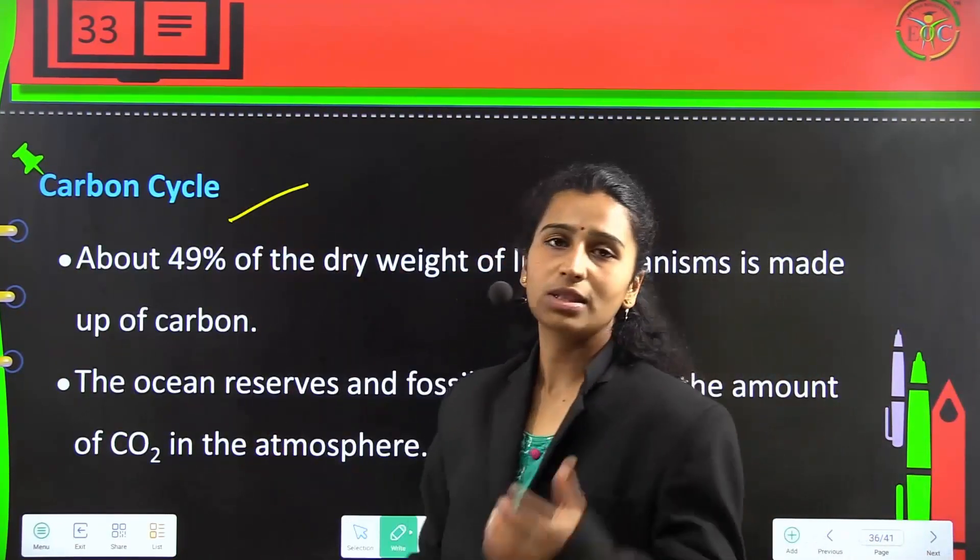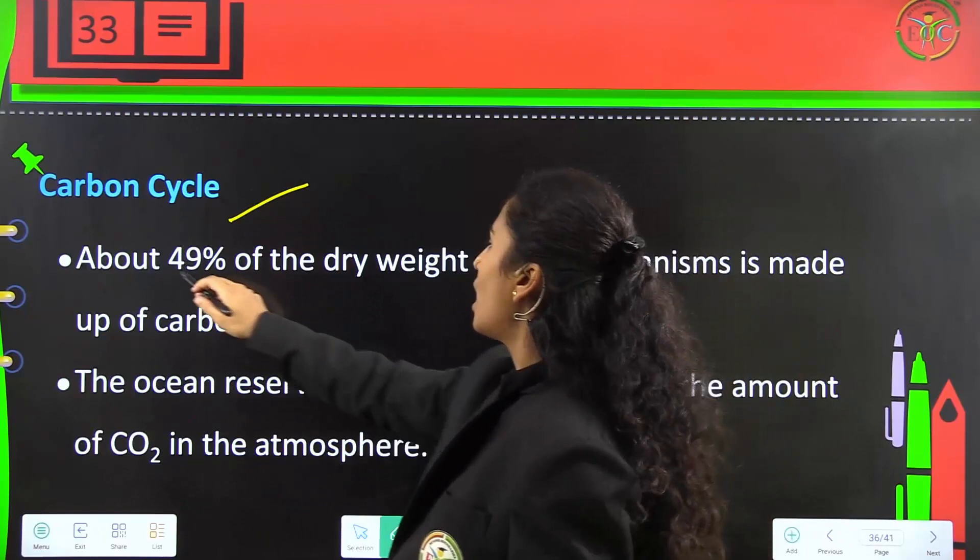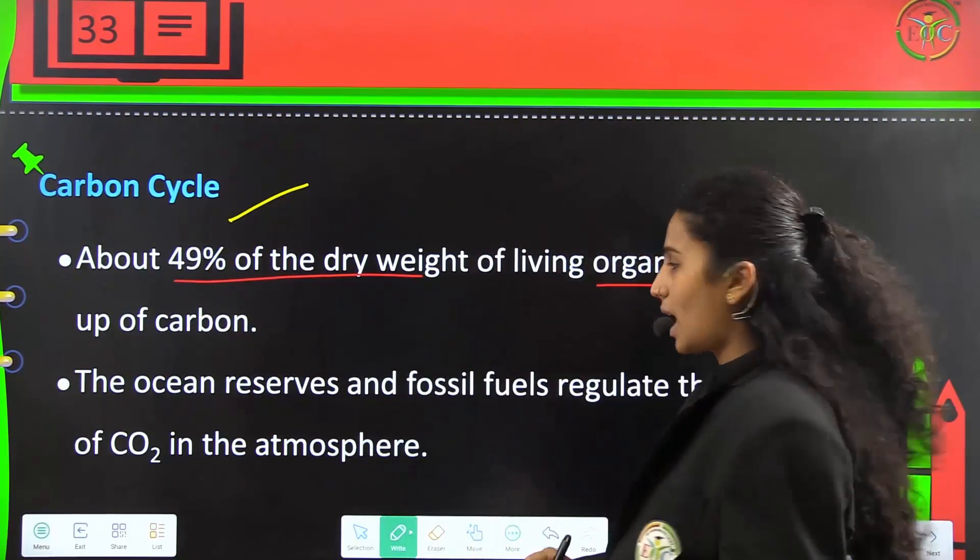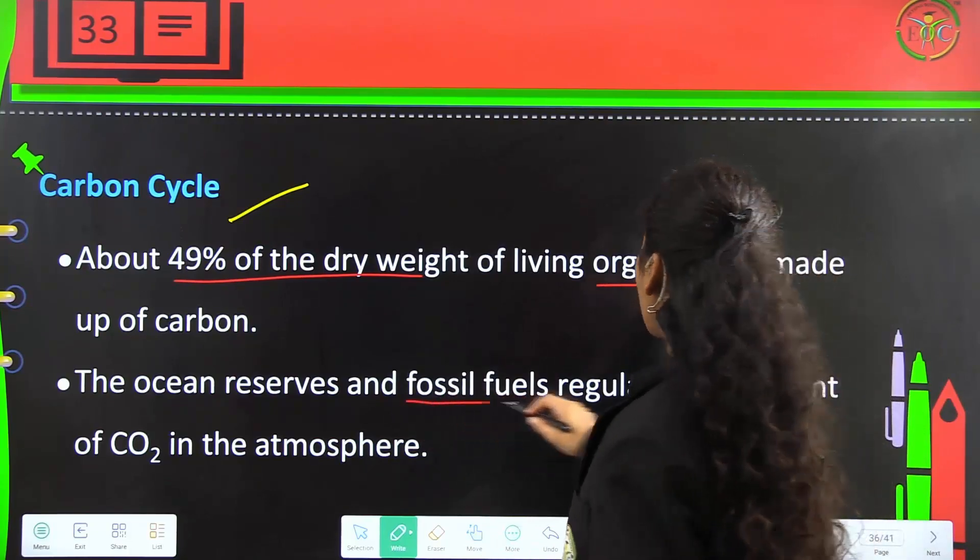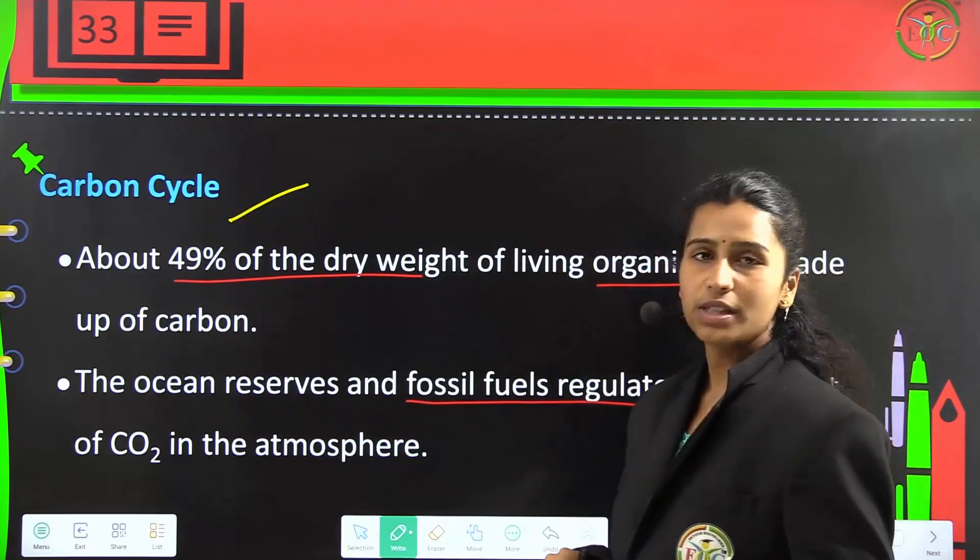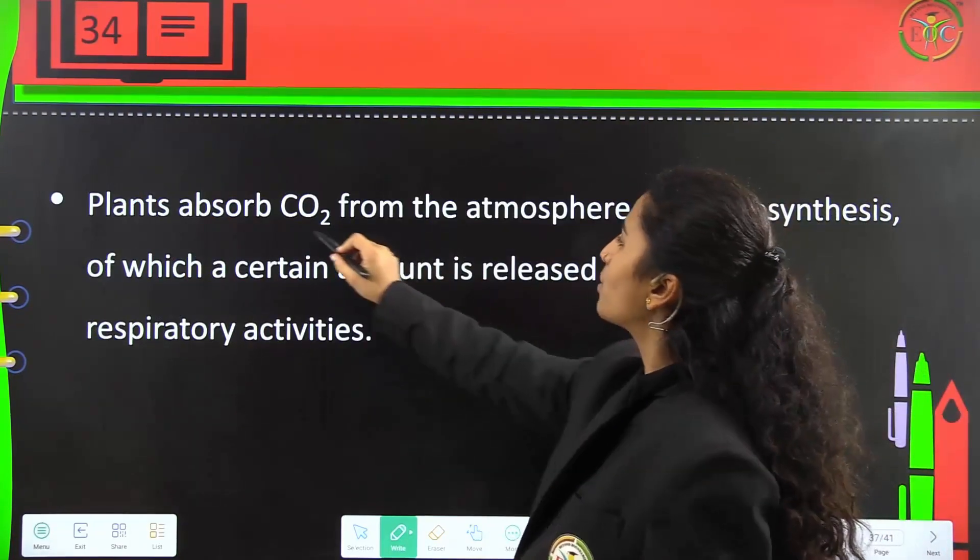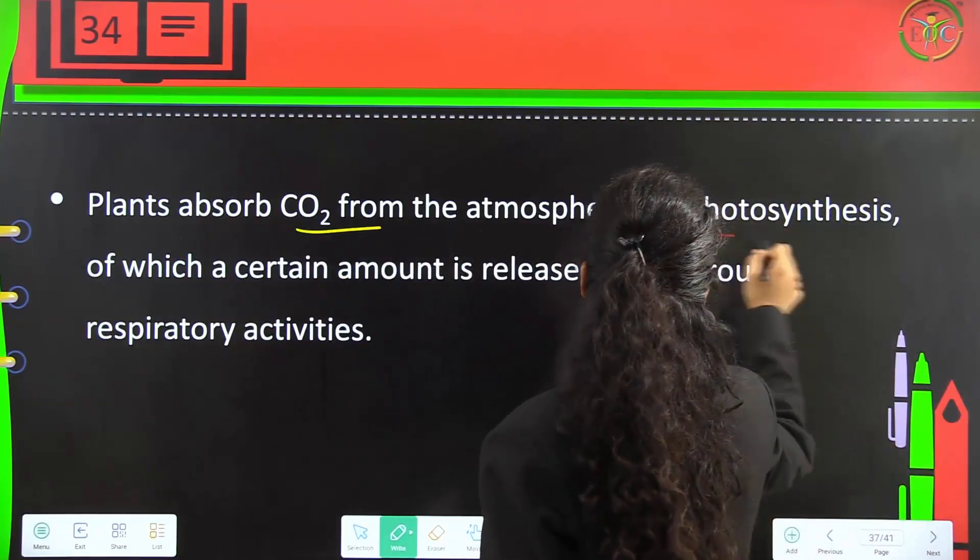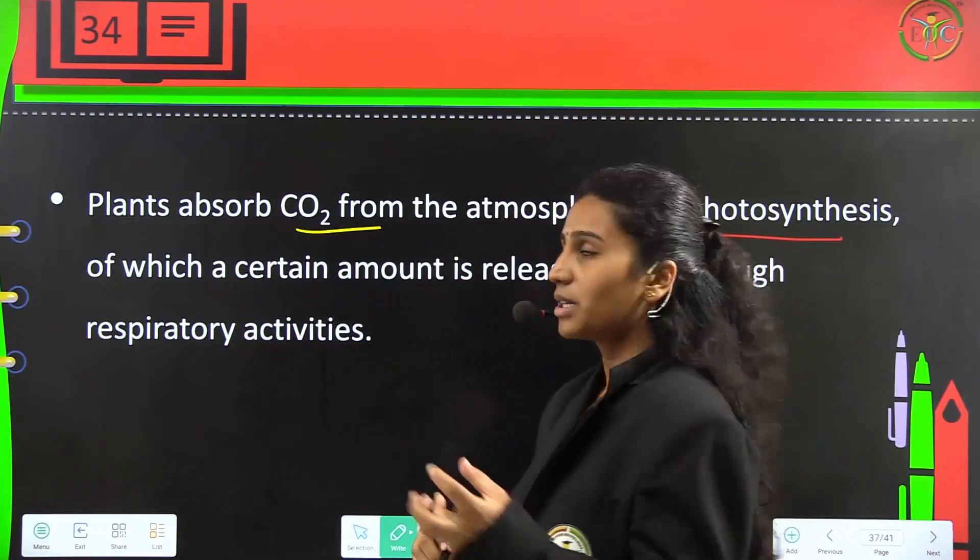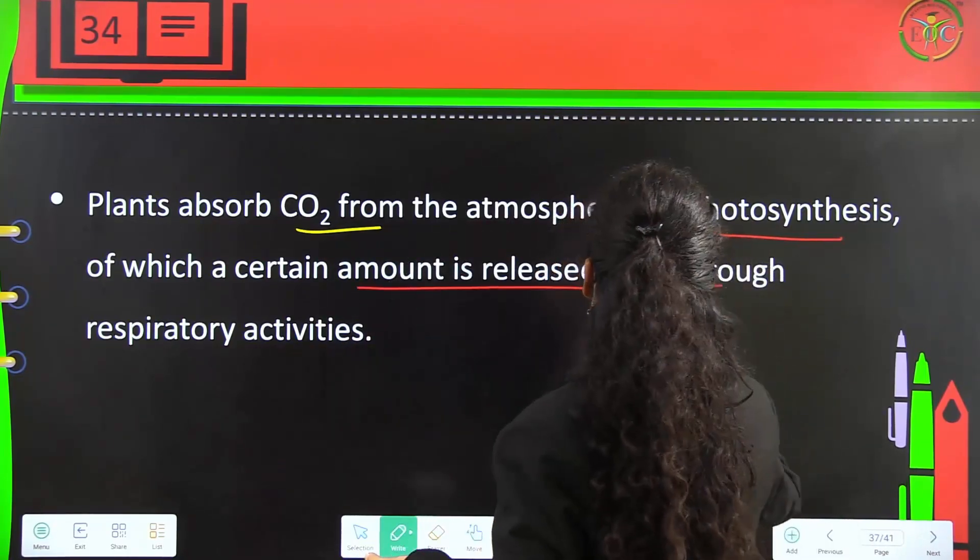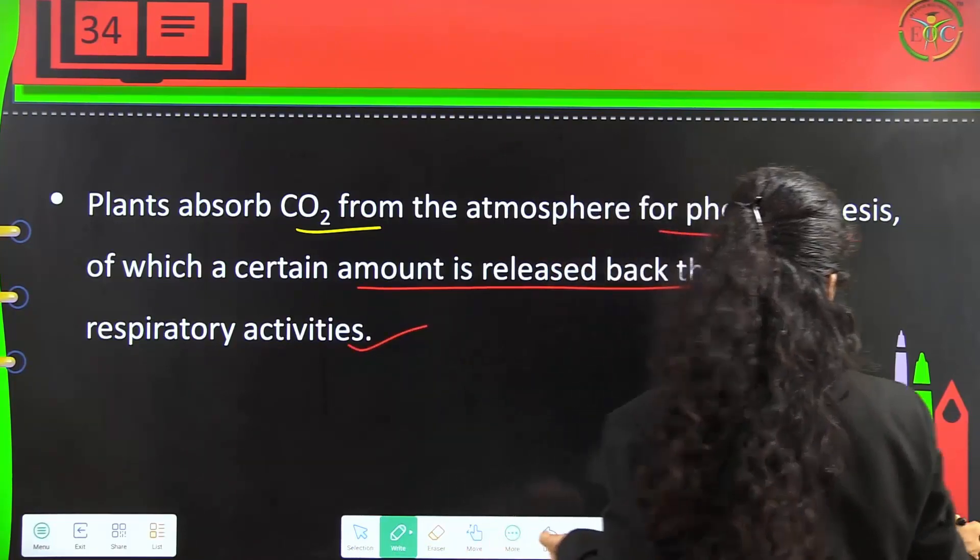Carbon cycle: About 49 percent of the dry weight of living organisms is made up of carbon. Ocean reserves and fossil fuels regulate the amount of CO₂ in the atmosphere. Plants absorb CO₂ from the atmosphere through photosynthesis, of which a certain amount is released back through respiratory activities.